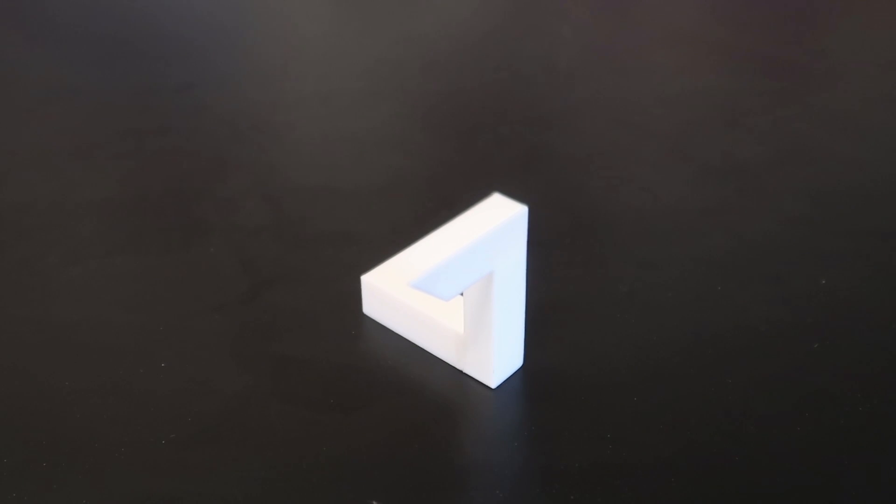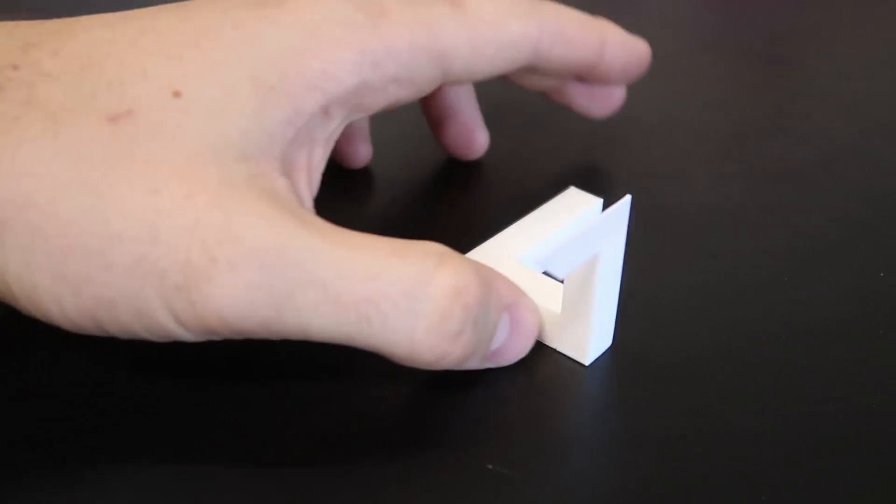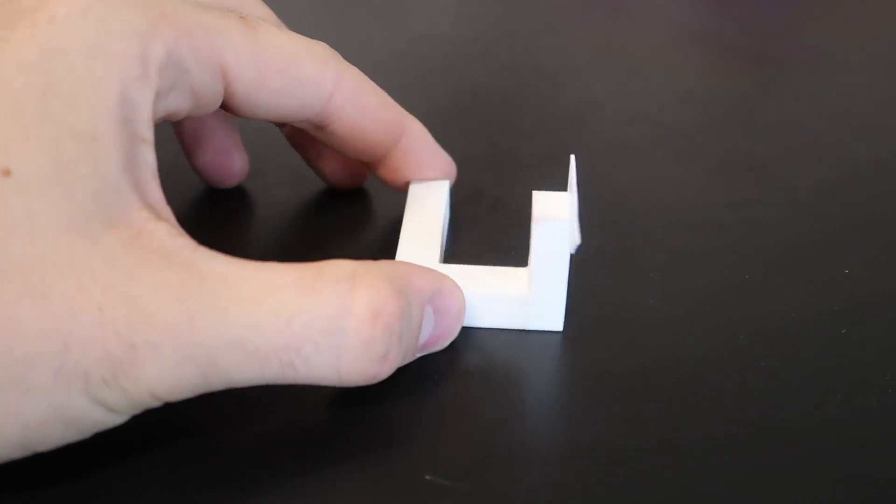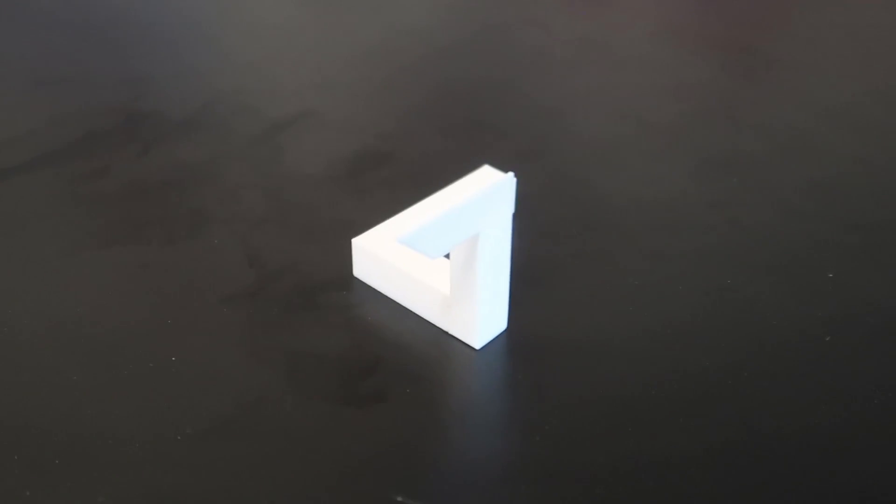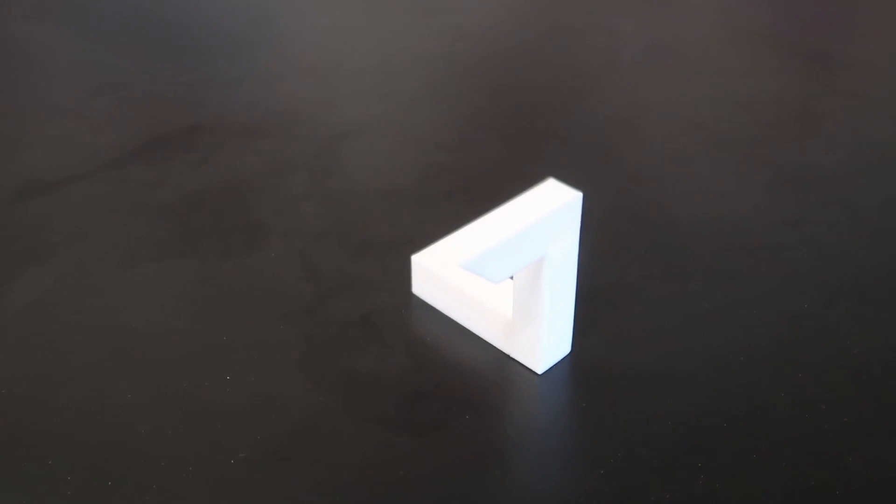For this illusion, check this out, I got here impossible triangle. For this illusion I got here impossible triangle. But if I move up the camera a little bit, boom, ha ha.